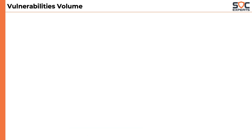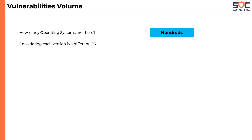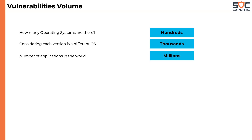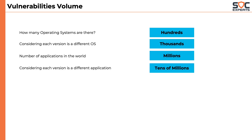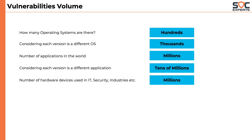There is a problem when it comes to the volume of these vulnerabilities. There are hundreds of operating systems in the world, and considering each version is a different operating system — Windows 8, Windows 10, Windows 11 — the number goes up to thousands. There are millions of applications, and considering every version is different, there will be tens of thousands of applications. Also, there are millions of different hardware devices in today's connected world of IoT. All these millions of systems could have vulnerabilities.